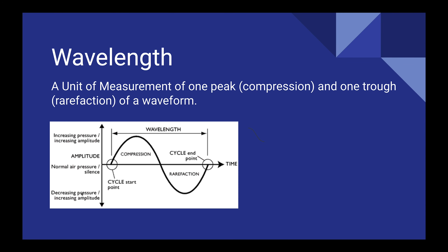The next concept is wavelength. A wavelength is a unit of measurement consisting of one peak — compression — and one trough, which is called rarefaction, of a waveform. Compressed air moves to non-compressed or negative pressure air — that's how a waveform propagates. One wavelength is one peak and one trough. Another term is peak-to-peak, meaning from the top of one peak to the top of the next, which is essentially the same wavelength.